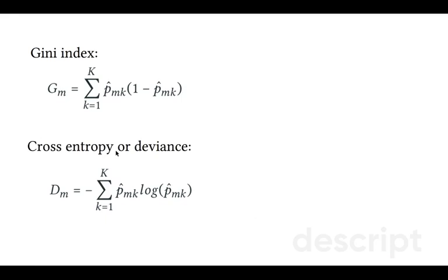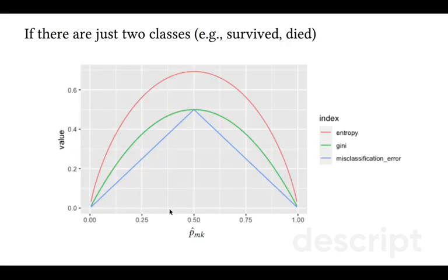Gini index and cross entropy or deviance are calculated according to these formulas. When we have just two classes we can plot entropy, Gini index and misclassification error against the proportion of class k observations in node m. As you can see we have the largest values of Gini, entropy and misclassification error exactly at 0.5. This is not surprising.